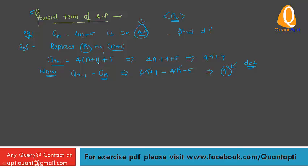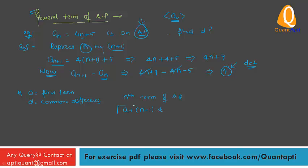The general term of an AP: let a be the first term and d be the common difference of an AP. Then the Nth term of an AP is given by AN = a + (N-1)×d. This is the Nth term of an AP.